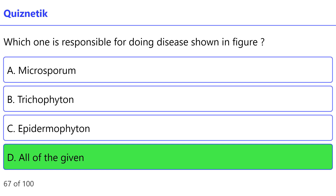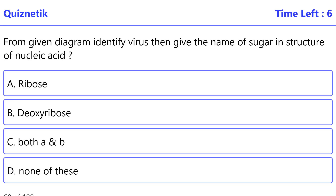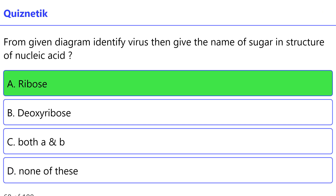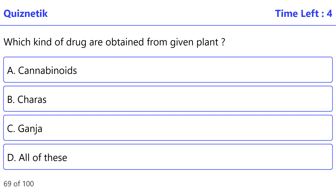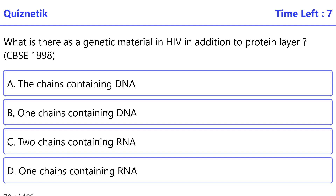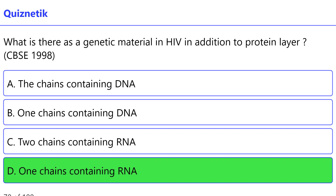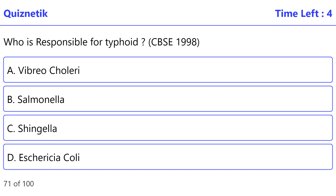Which one is responsible for the disease shown in the figure? The correct option is D — all of the given. From the given diagram, identify the virus, then give the name of the sugar in the structure of the nucleic acid. The correct option is A — Ribose. What is there as genetic material in HIV in addition to the protein layer? The correct option is D — one strand containing RNA.